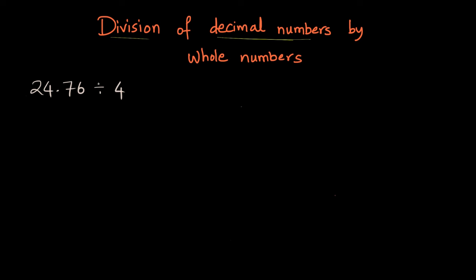We will try and ignore the decimal point for the time being. We will come back to this and put the decimal point again. But to simplify things for now, we will divide 2476, which is the number without the decimal point, and we will see what quotient we get and then adjust the answer.